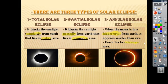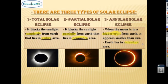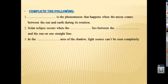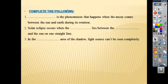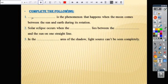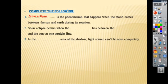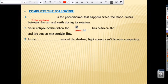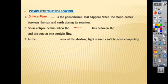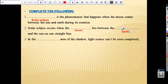Let's solve some questions. Complete the following. Number one: a solar eclipse is the phenomenon that happens when the moon comes between the sun and earth during its rotation. Number two: a solar eclipse occurs when the moon lies between the earth and the sun on one straight line.